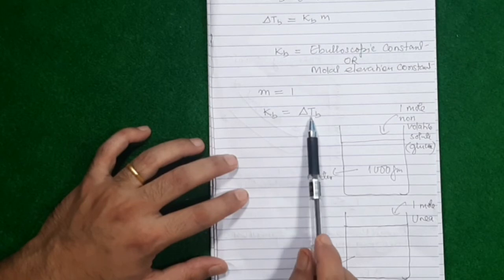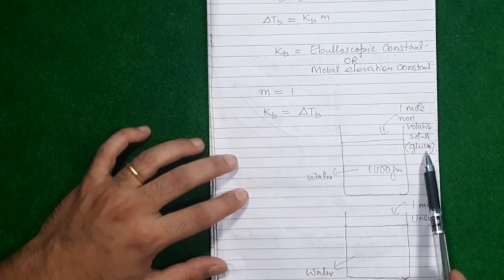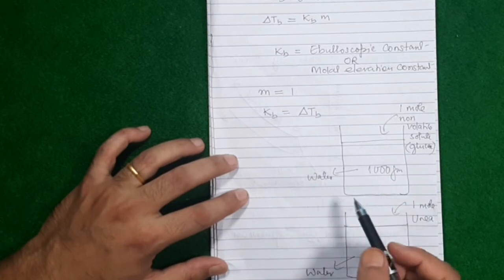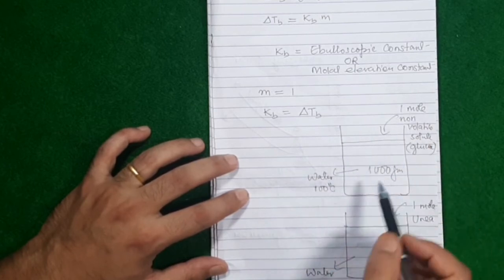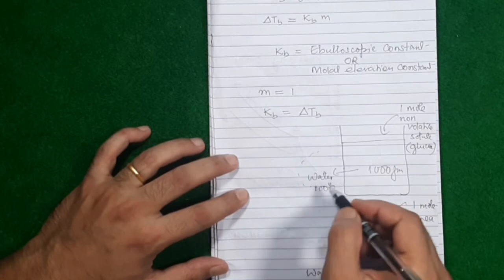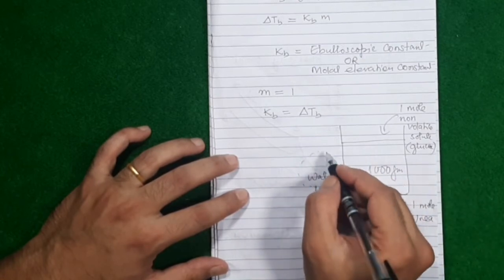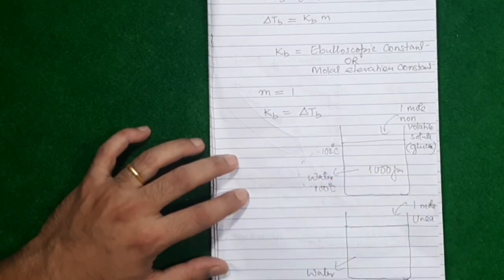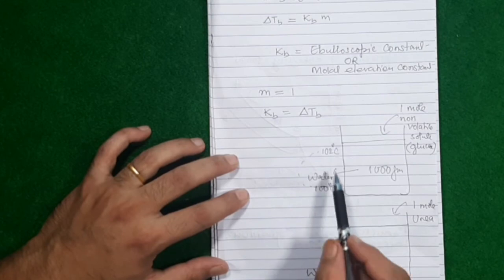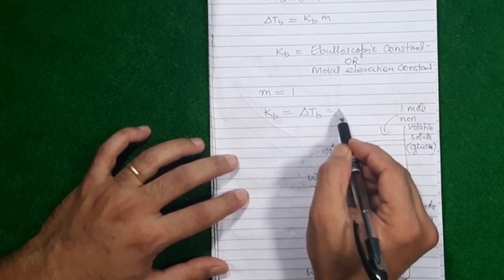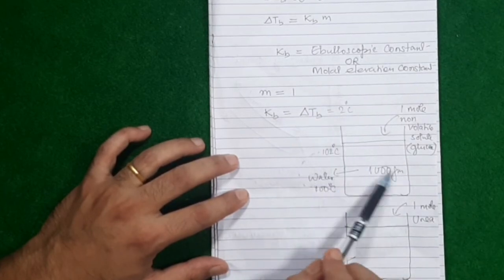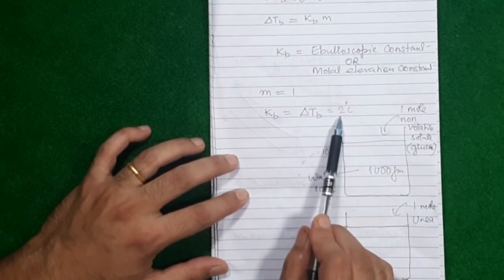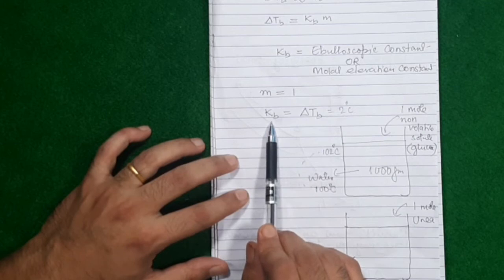The ebullioscopic constant is the increase in boiling point of water when you convert it into a solution of molality 1. If the boiling point of water rises by 2 degrees, then Kb = delta Tb = 2 degrees. This increase is a constant — it will always rise by the same amount.